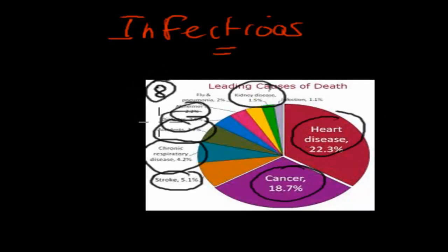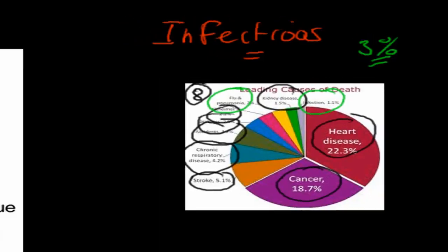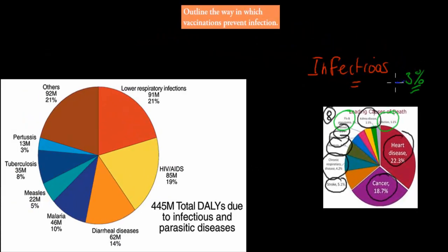This is in the developed world, such as Australia or America. 8 of them are non-infectious. Pneumonia, flu, and infection account for about 3% of current deaths — varying by country. Whereas 100 years ago, infectious diseases were the majority.